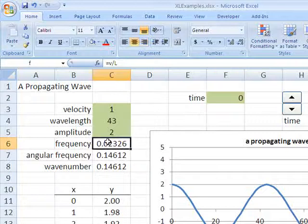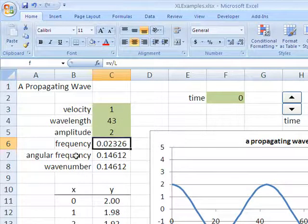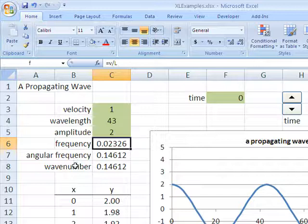But there are some other values here that are calculated: frequency, something called angular frequency, and something called wave number.